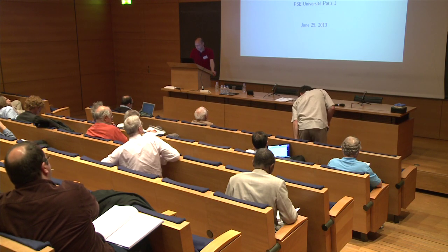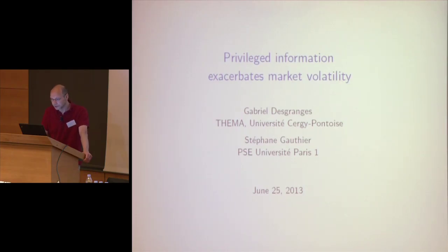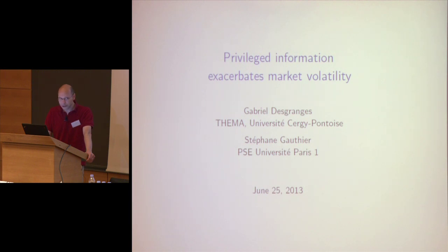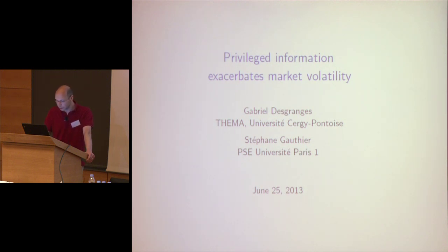I'm going to present a paper written with Gabriel, so you will recognize many of the subjects he has explained. This is in a different setup. The main difference is that agents do not extract information from the price — we will be in a setup where this is not possible because agents have to form their decisions before the price is determined. We obtain a sharper result about the relationship between the information structure and stability: higher precision of information is always detrimental to stability, in that it always favors a multiplicity of rationalizable outcomes.